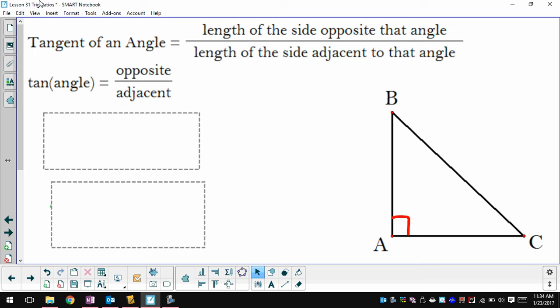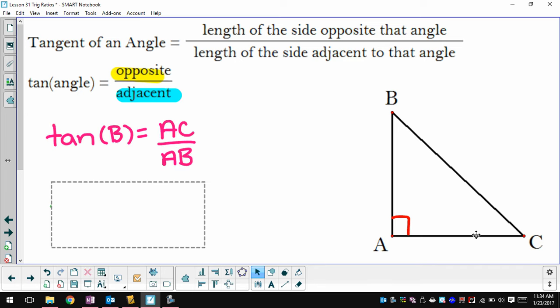The last relationship is a tangent, and that should be a word that sounds familiar. We talked about tangents to circles, and now we're talking about tangents and right triangles. This time we take the opposite side and the adjacent side, and that fraction gives us the tangent of an angle. So if I look at angle B, my opposite side is AC, my adjacent side is AB. Tangent of angle C, my opposite side is now AB, and my adjacent side is AC.